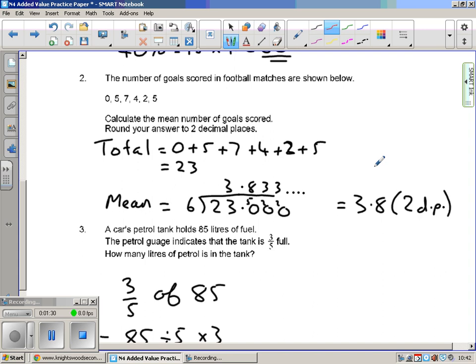On to question two. The number of goals scored in football matches are shown below. Calculate the mean number of goals scored. Round your answer to two decimal places. To work out the mean we add up all the numbers and divide by how many numbers we have. So the first thing I'm going to do is add them all up and that will be finding the total. Setting out my work and showing exactly what I'm doing, it comes to 23.